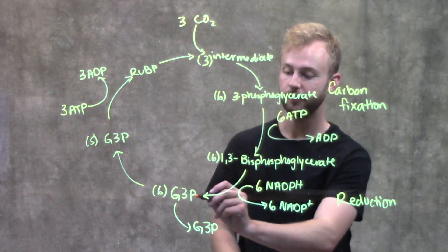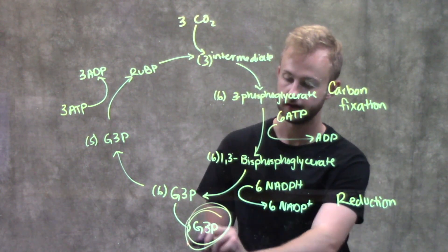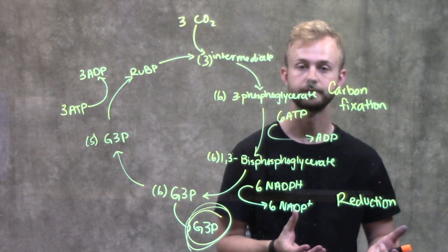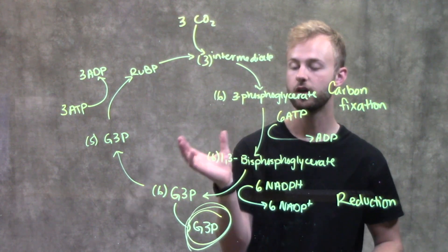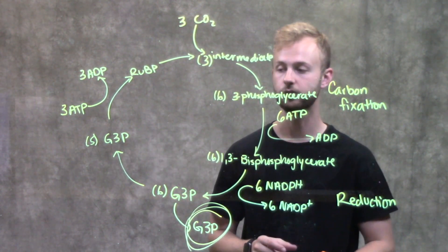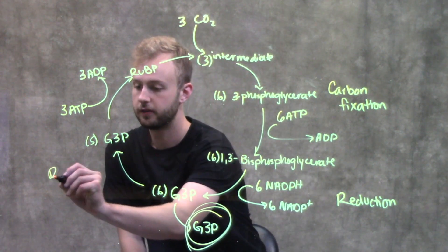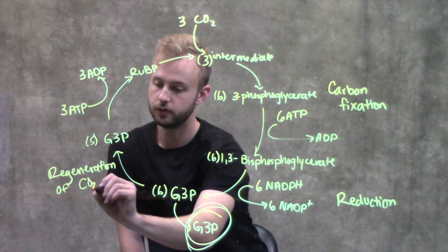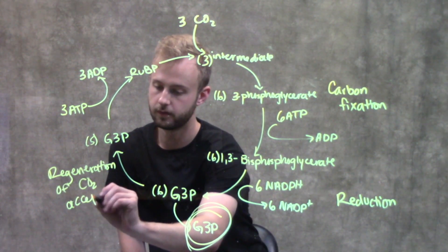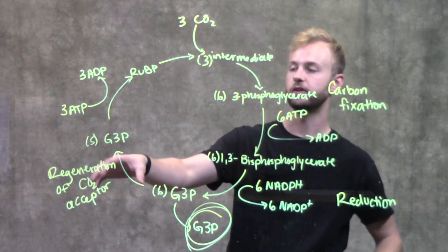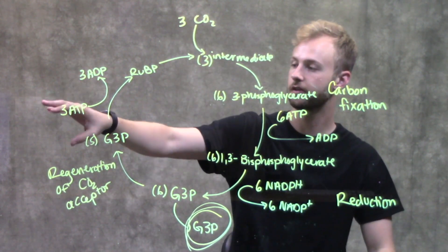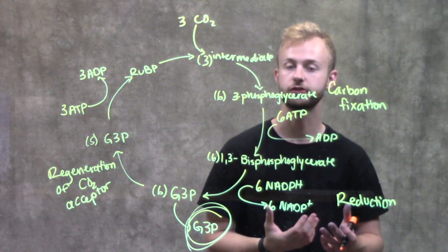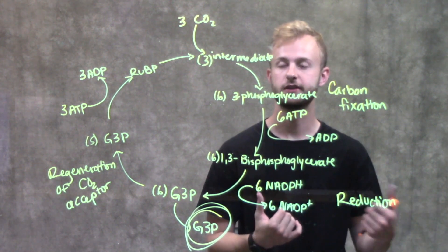From here, 1 G3P is going to leave the Calvin Cycle, and this 1 G3P is going to be the one used to make glucose. The rest of these G3P molecules are going to go into the next phase of the Calvin Cycle, which is the regeneration of the CO2 acceptor. These 5 G3P molecules are then going to be acted on by 3 ATP molecules to make more RuBP, which is that 5-carbon sugar needed at the beginning to attach our carbon dioxide to.